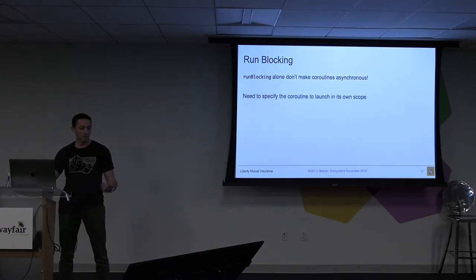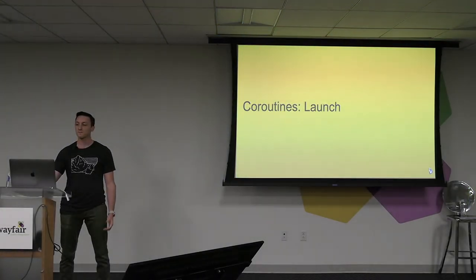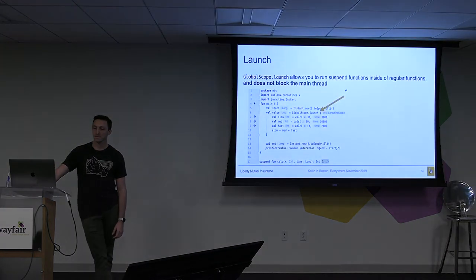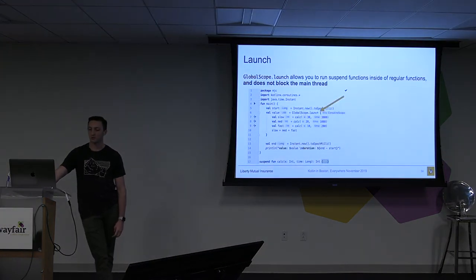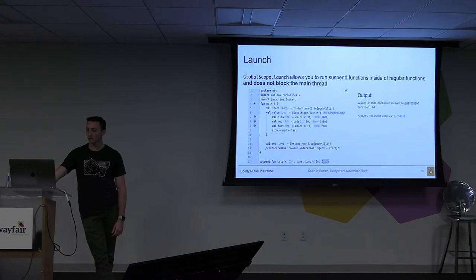Which brings me to launch. We can replace runBlocking with globalScope.launch, because it allows you to run suspended functions inside your regular one — just like runBlocking — and it does not block the main thread. However, when we run this code as-is, we're going to run into another issue where the code completely skips over, just like in my previous live demo of globalScope.